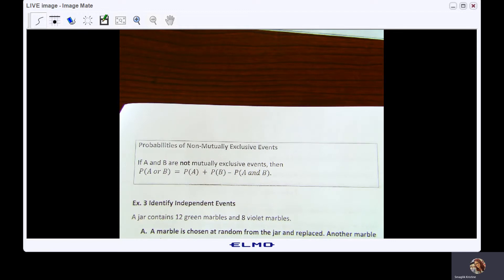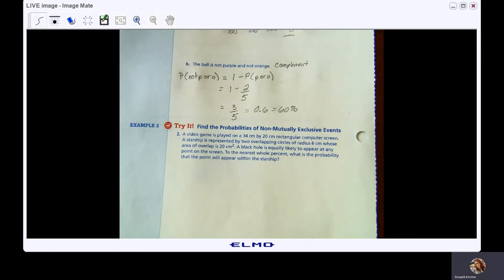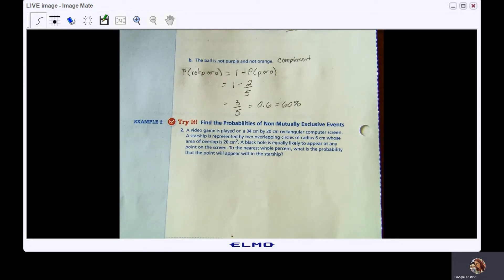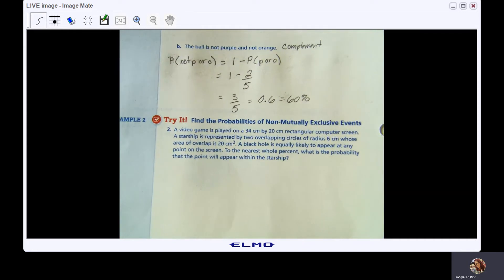Let's go ahead and take a look at your Try It. And again, I encourage you to pause the video, jot it down, give it a shot, and then come on back and see how you did. So, a video game is played on a 34 cm by 20 cm rectangular computer screen. A starship is represented by two overlapping circles of radius 6 cm whose area of overlap is 20 cm squared. A black hole is equally likely to appear at any point on the screen. To the nearest whole percent, what is the probability that the point will appear within the starship?